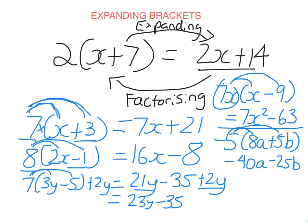If you are multiplying a variable more than once, reflect that in the power. So 7X times (X minus 9) gives 7X squared minus 63. Make sure you're okay with negatives. Sometimes you might have a negative out the front — like negative 5 times (8A plus 5B): negative 5 times 8A is negative 40A, and negative 5 times 5B is negative 25B. Make sure you remember to distribute to everything inside the brackets — people often forget to multiply by the second term.